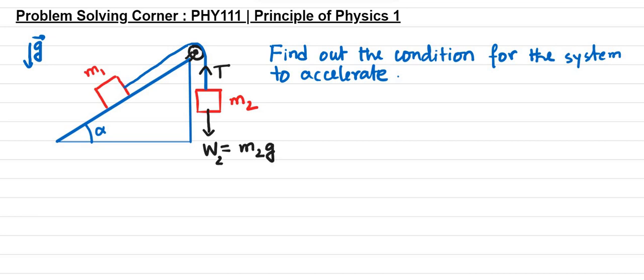The forces that are acting on M1, we have W1 which is equal to M1G, and then we have this tension T, and there might be friction forces. For example, if the object or the system accelerates in this direction,